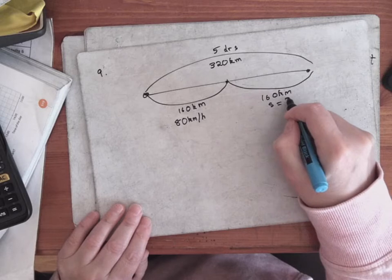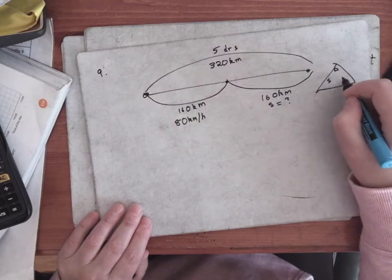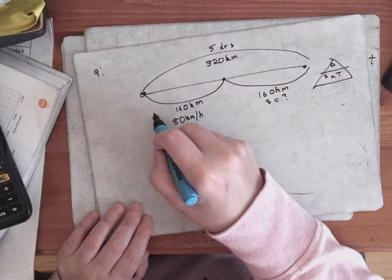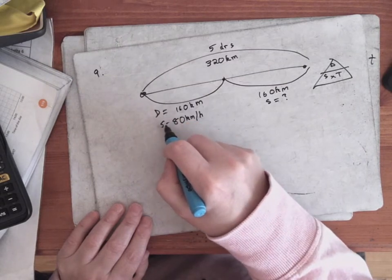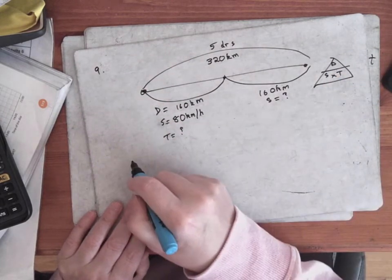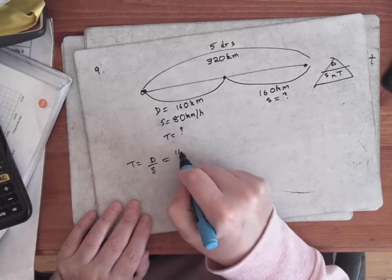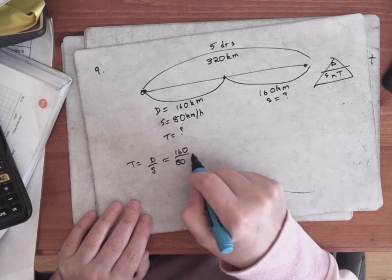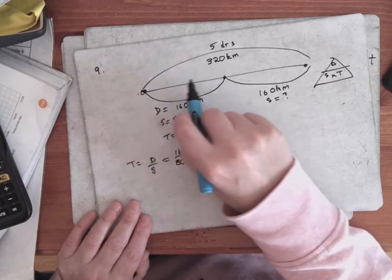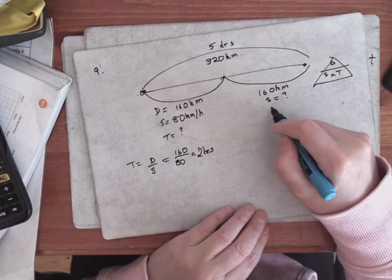Treat these as two separate journeys. For the first part of the journey we have the distance and the speed but we're missing the time. Time equals distance over speed, so that's 160 over 80, which gives two hours. This means the first part of the journey took two hours.